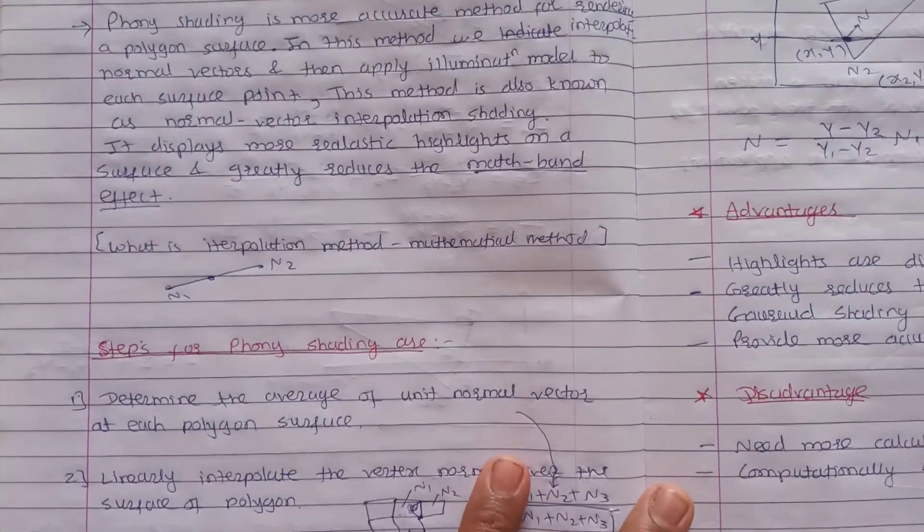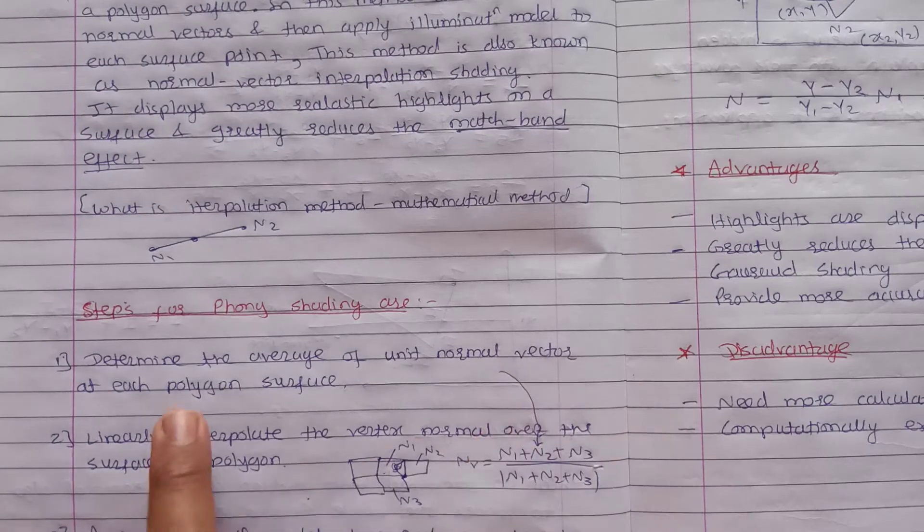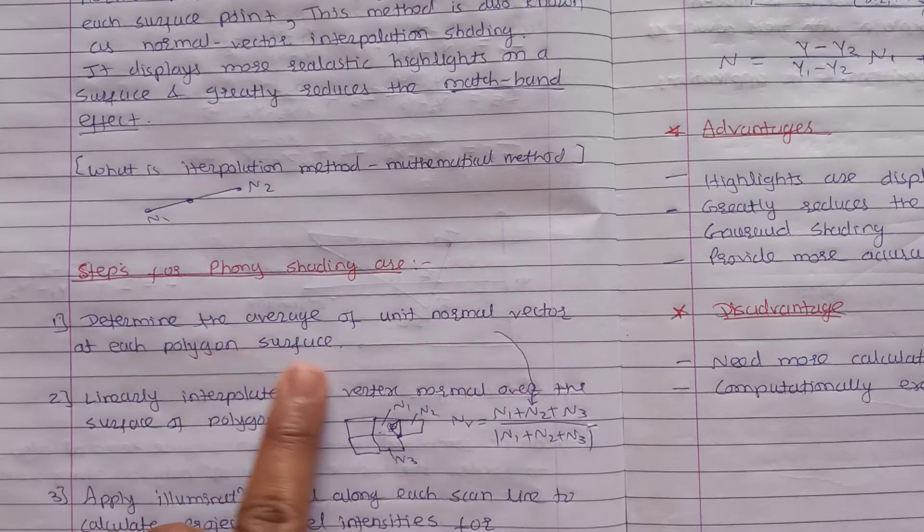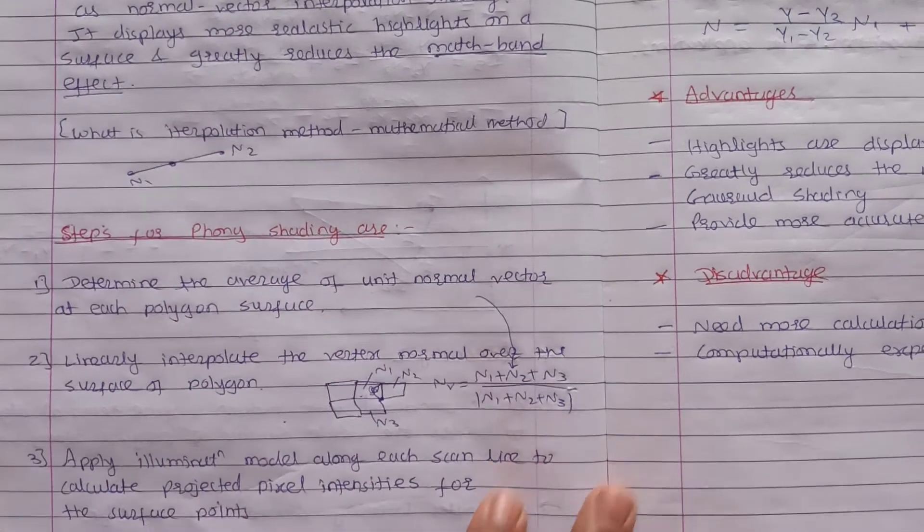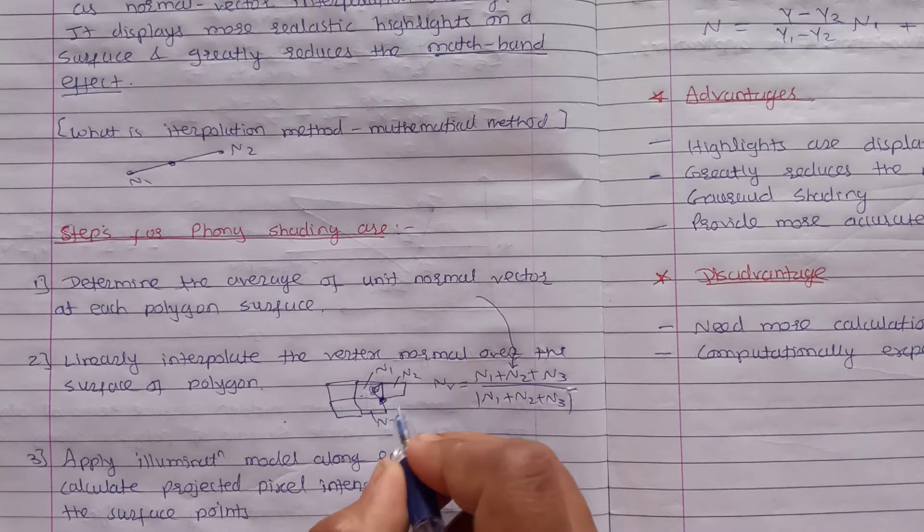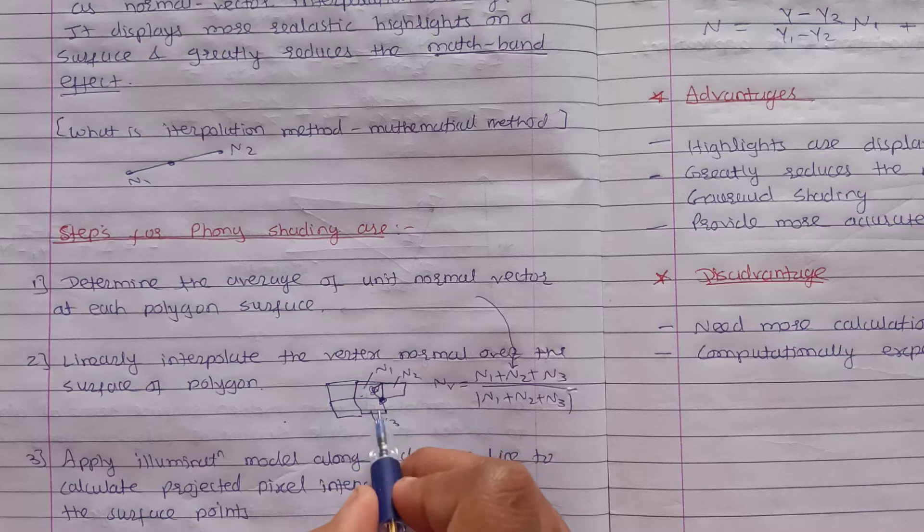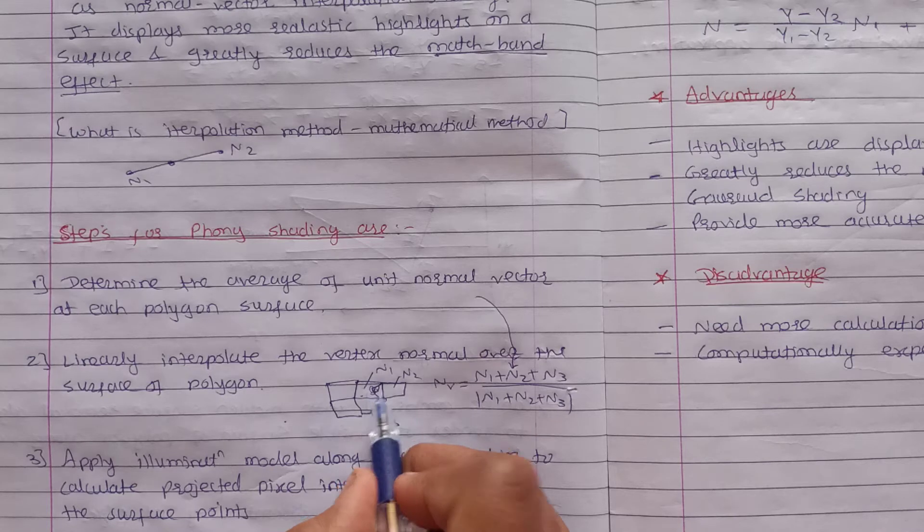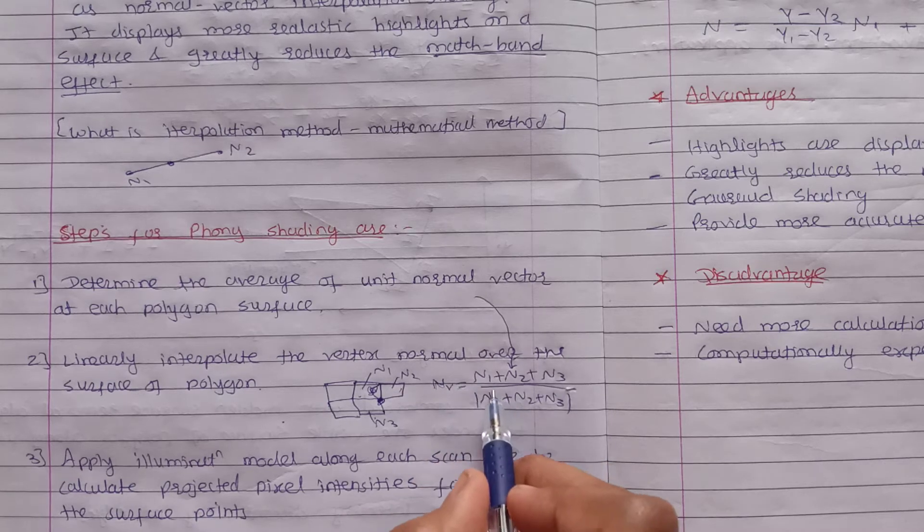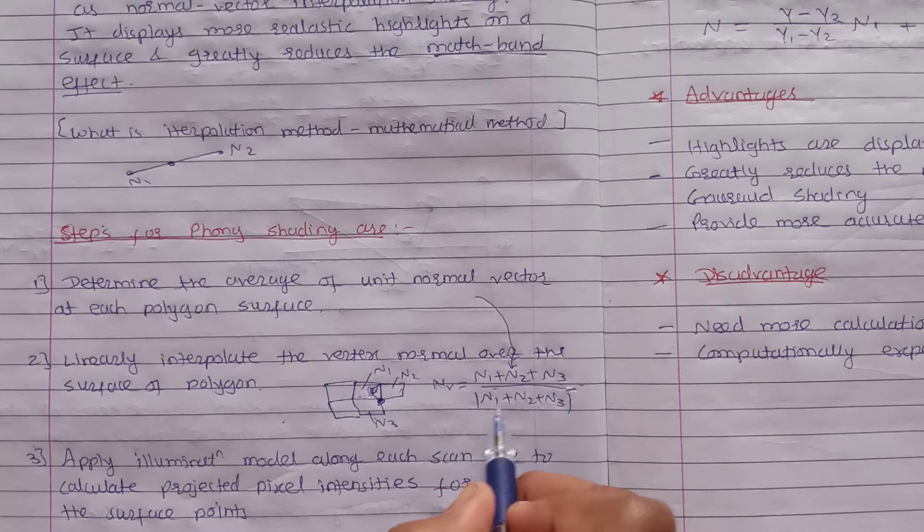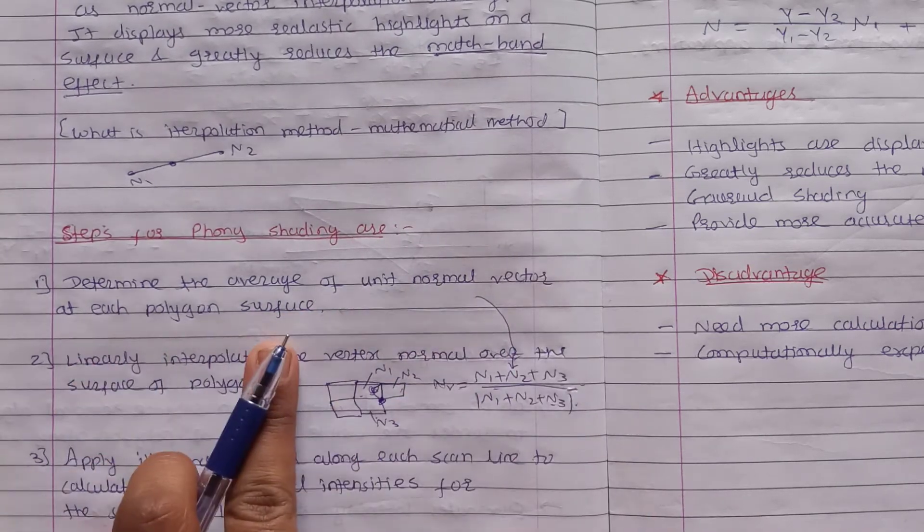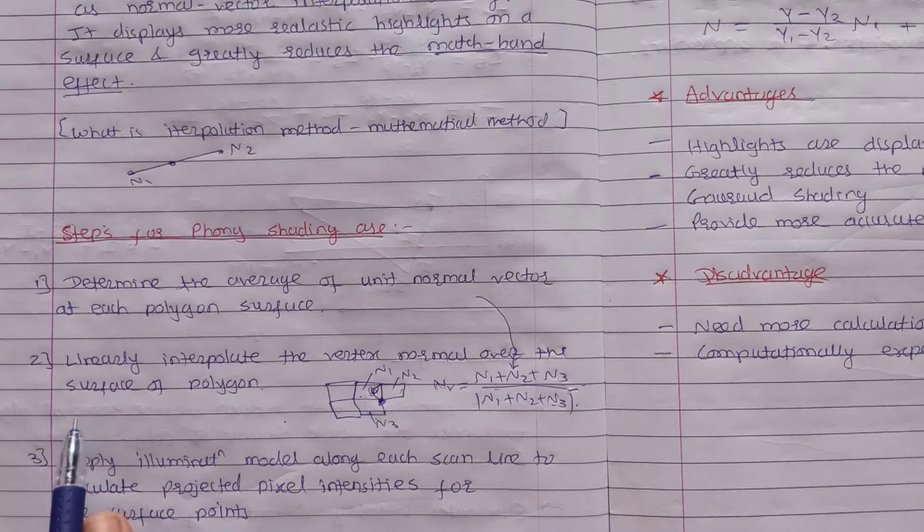Now we will see the steps of Phong shading. First, determine the average of unit normal vectors at each polygon vertex. Suppose this is the polygon and if we consider this vertex which connects n1, n2, and n3 polygons, the normal vector value will be (n1 + n2 + n3) divided by the magnitude of (n1 + n2 + n3). Second, linearly interpolate the vertex normals over the surface of the polygon.